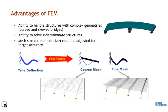FEM has many advantages for engineering applications. One is the ability to handle complex geometry, such as curved bridges. It can also be used to solve indeterminate structures where static equilibrium equations are not sufficient. Another important advantage is the ability to adjust mesh size, which drives the size of the finite element. Typically, the smaller the mesh size, the more accurate the result. The true deflection result can be achieved only if the member is divided into elements small enough. However, the finer the mesh, the more elements generated, meaning more equations to be solved, so analysis time increases with finer meshing.